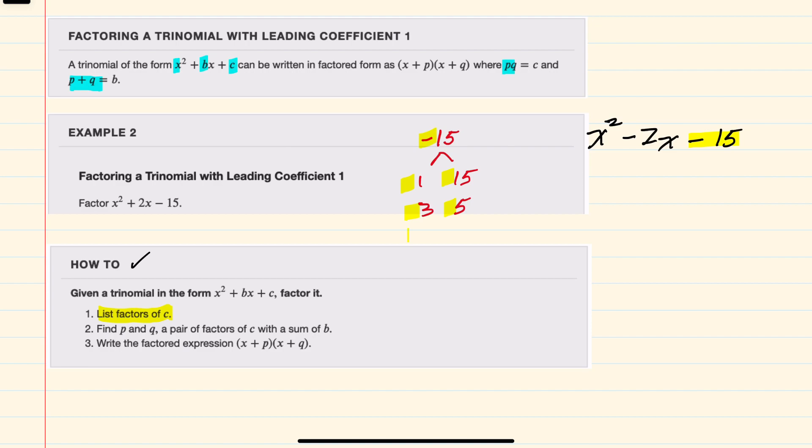But I'm also told that p and q, which I have listed here as being either 1 and 15, or 3 and 5, have to add up to our middle term, which is -2. So the signs on each of these are different, and they add up to -2.